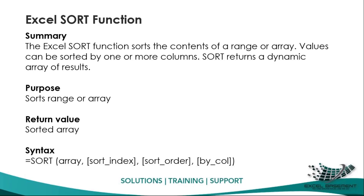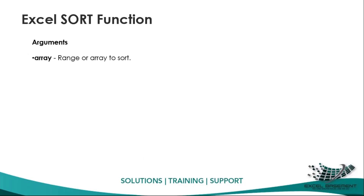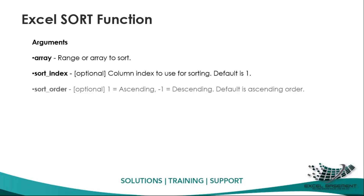The syntax of this function has four different arguments. The first is 'array', which is compulsory, and then three optional ones: sort_index, sort_order, and by_col. The 'array' argument means the range or array to sort. 'Sort_index' means which column will be the base point for sorting — the default is 1.